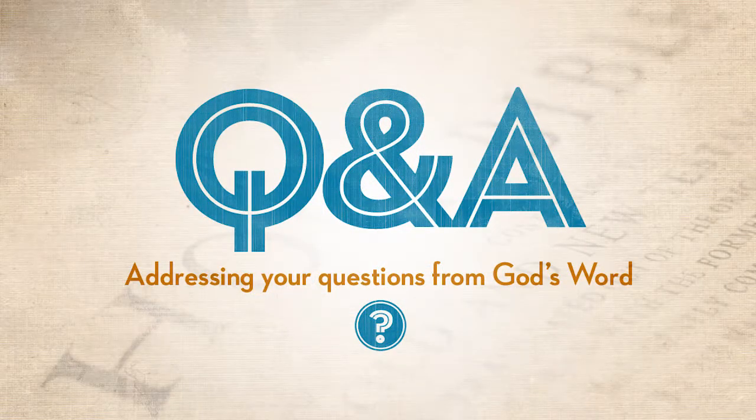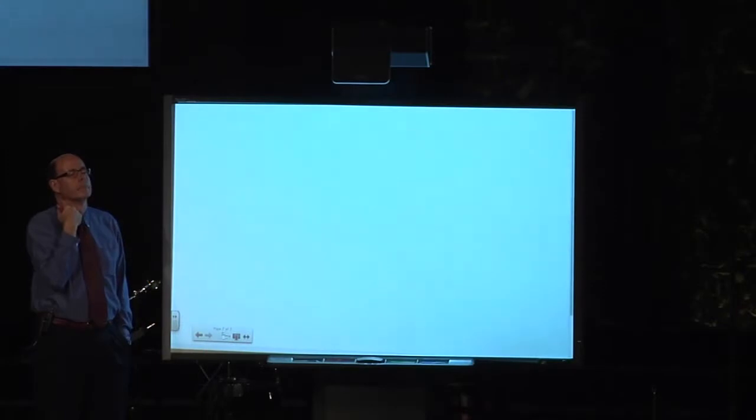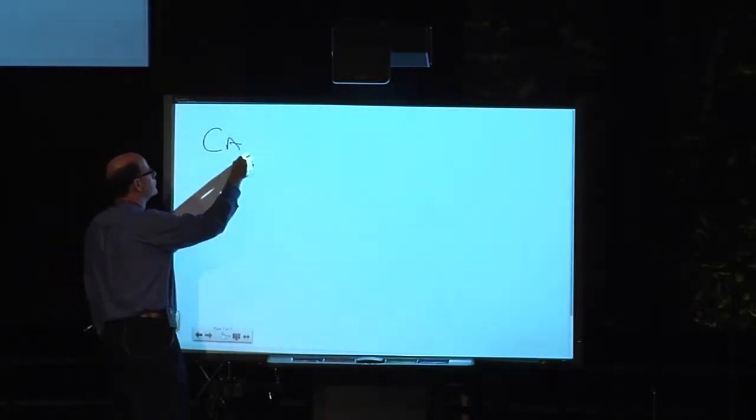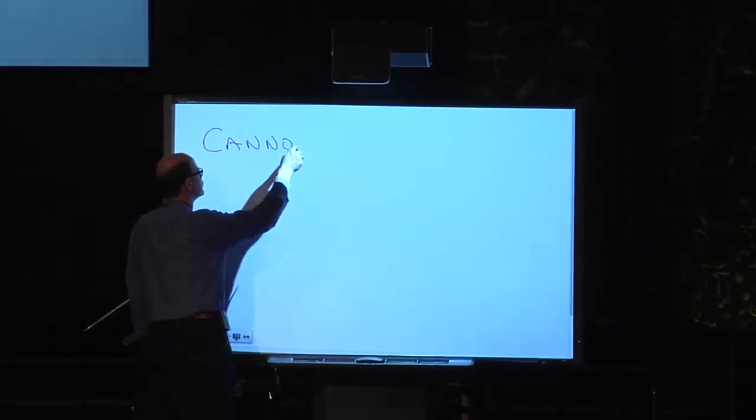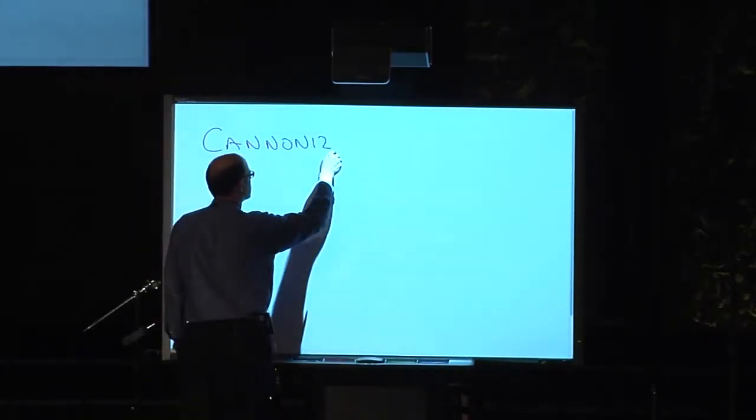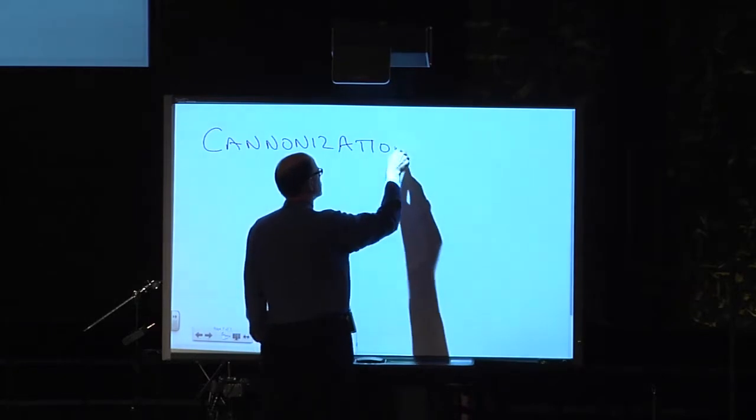Okay, this question is about the canonization of the books of the Bible. One of the criteria is that the book in question was referenced by ancient church leaders. So in Jude 14 and 15,